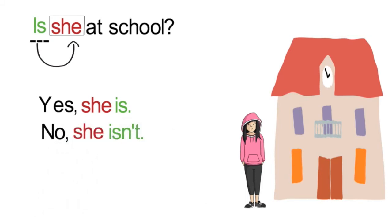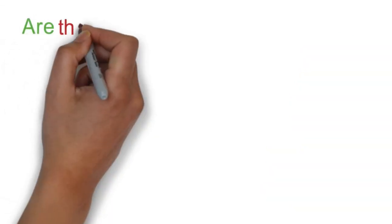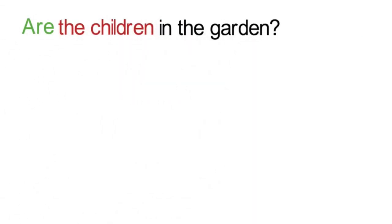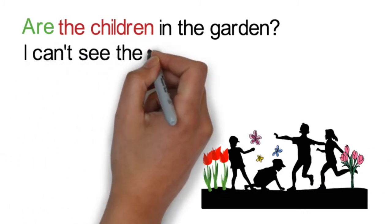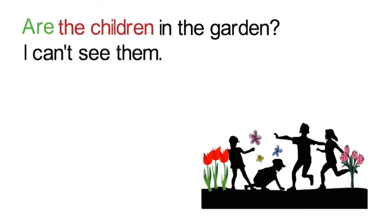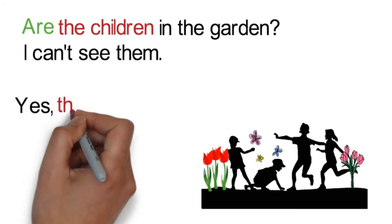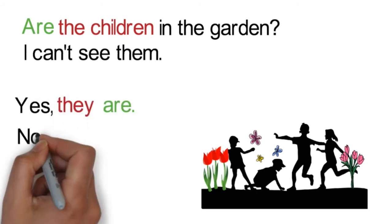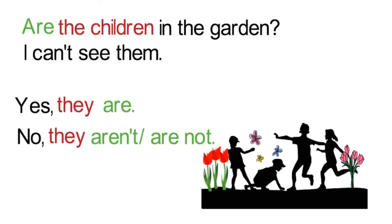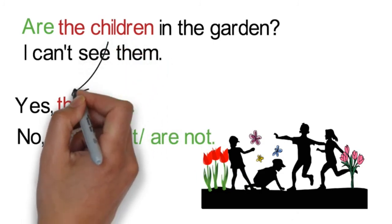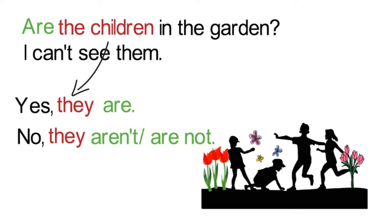An example of the plural verb to be in a question is Are the children in the garden? I can't see them. The answer would be either Yes, they are or No, they aren't. The children is the same as they. Therefore, we need to use the plural form are.